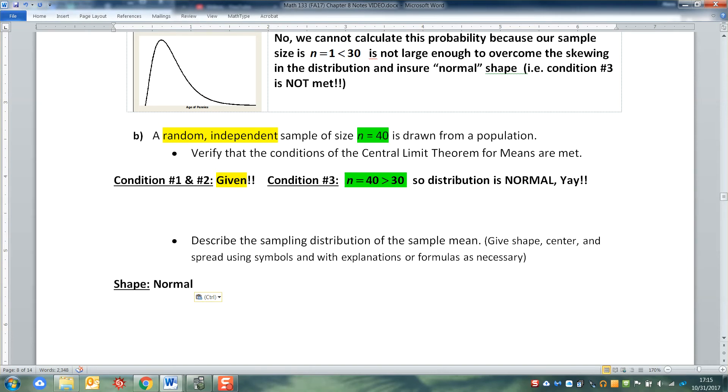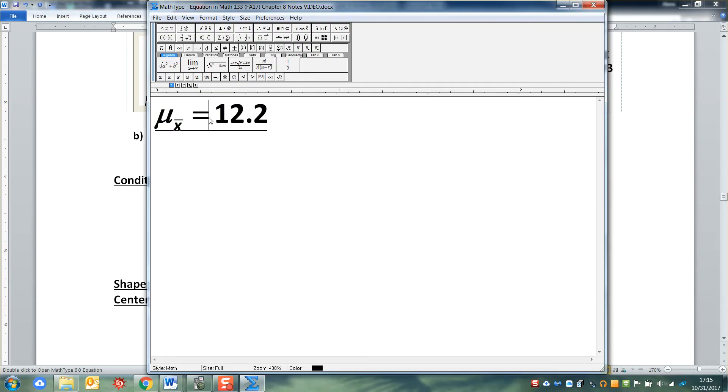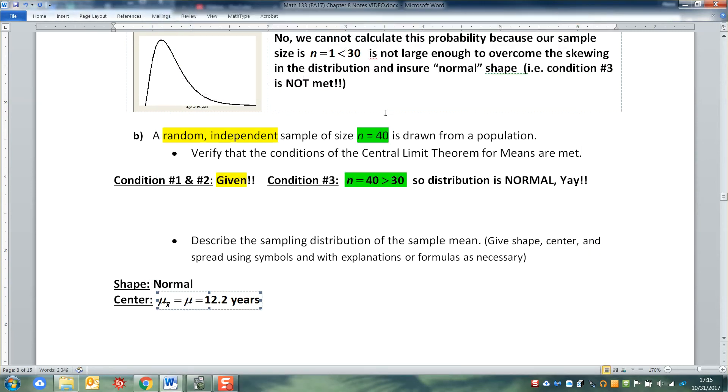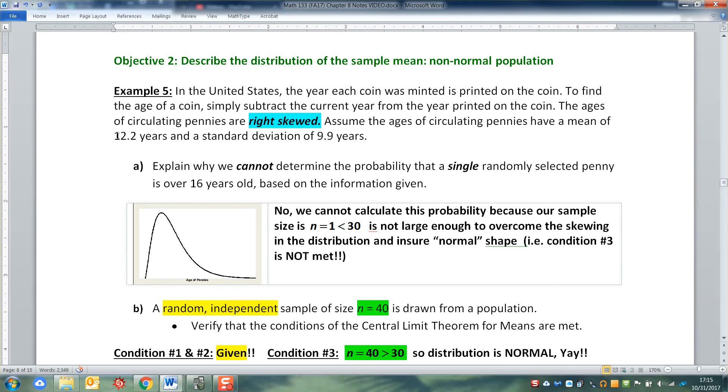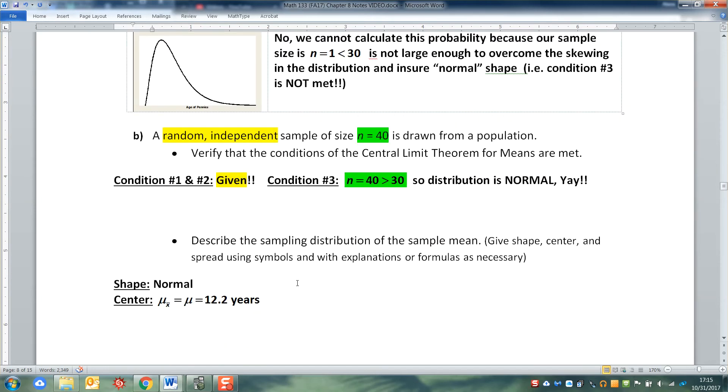The center would be the mean of the x bars, but that's equal to the mean, but that's equal to 12.2. We were told up above that the mean is 12.2. And in this case the unit is years. This is the age of pennies. It says right there that the mean is 12.2, so that means that my mean down here is 12.2.